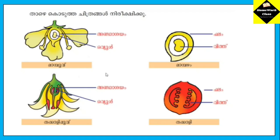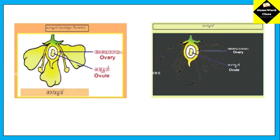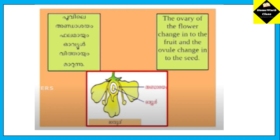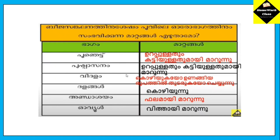The ovary is changed into fruit. The ovule is called seed. The ovary of the flower is changed into the fruit and the ovule is changed into the seed.